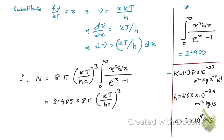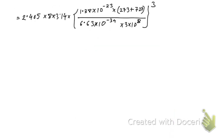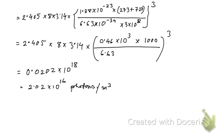Now we put in the values of Boltzmann's constant, Planck's constant, and the speed of light. Using a calculator with those values, we obtain the number of photons per meter cube.